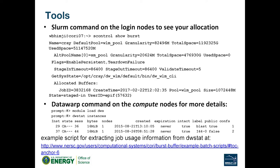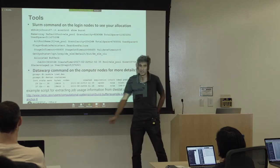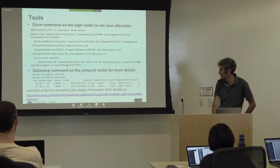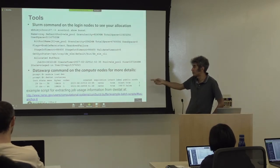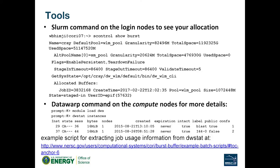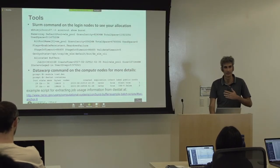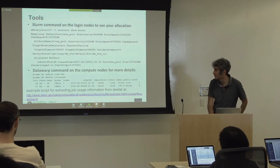Two useful tools: one is the Slurm command 'scontrol show burst', which shows information about the available system, the pools that are available, and allocated buffers for you specifically — it can also remind you of a persistent name you've forgotten. Another useful command you can run in your job is the 'dwstat' scripts, which show you which burst buffer nodes you've been allocated, how many, and therefore how broadly your files are striped.